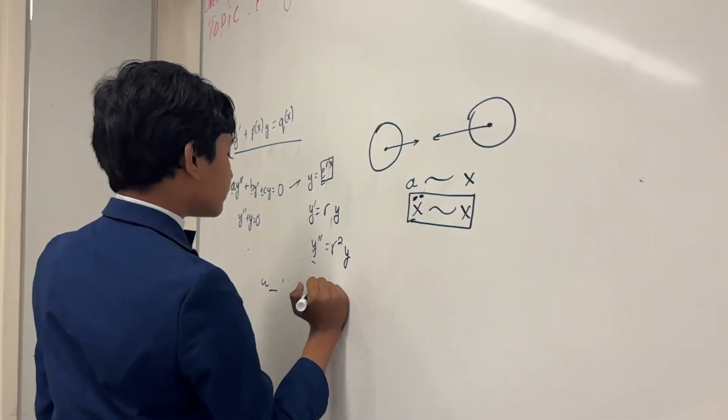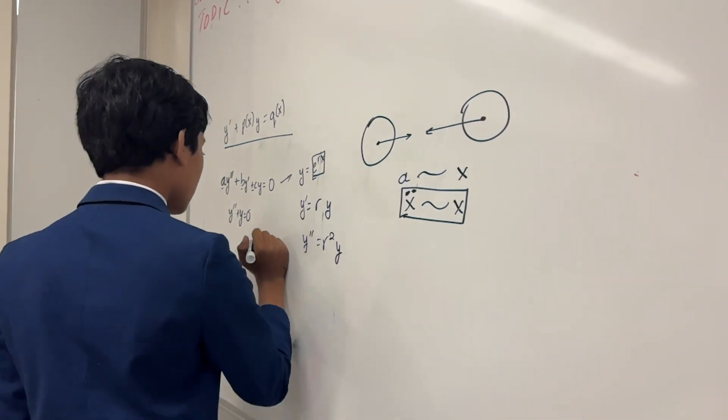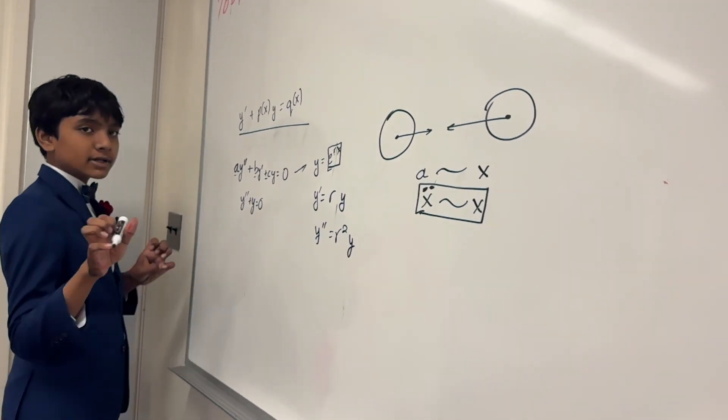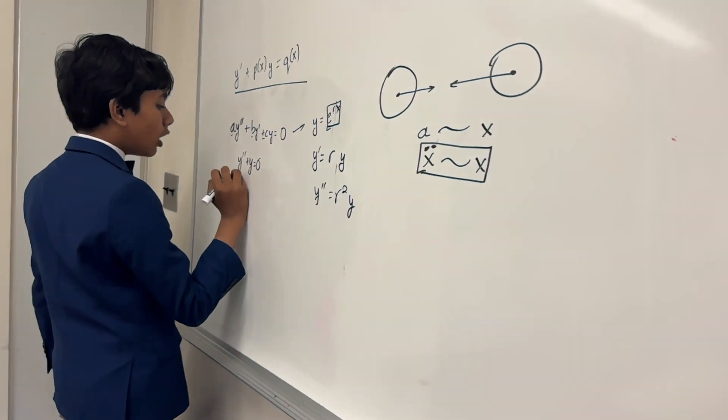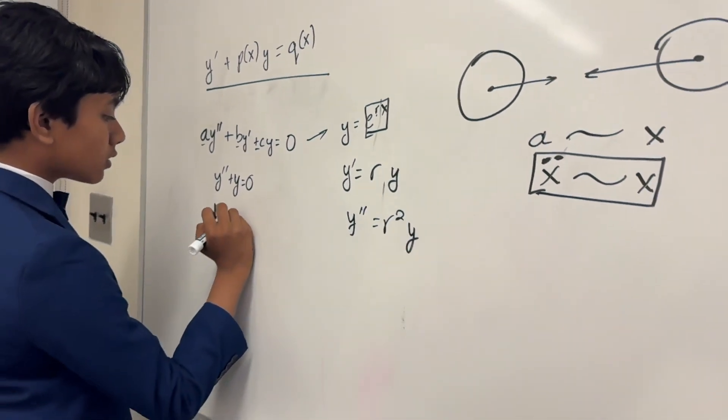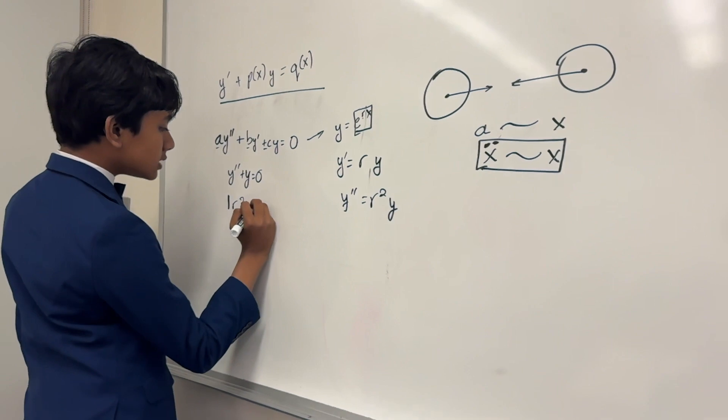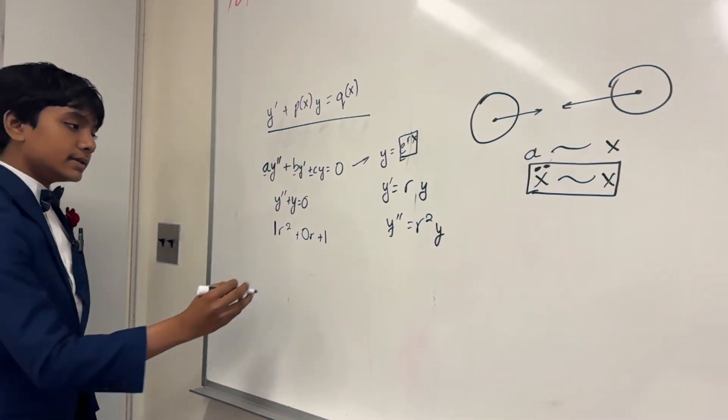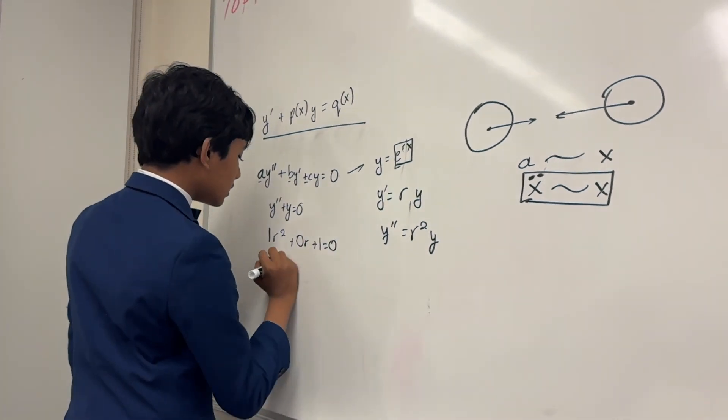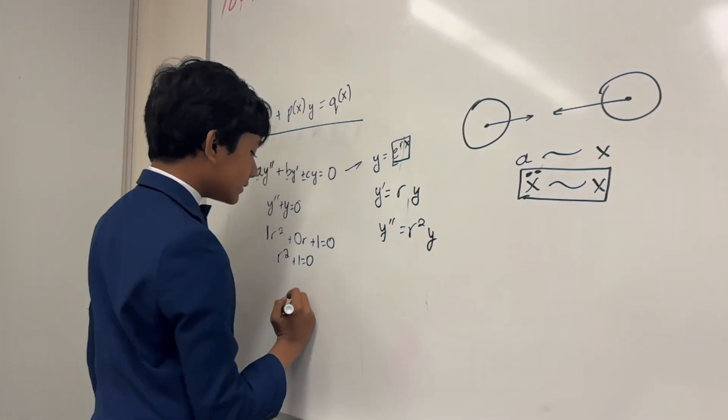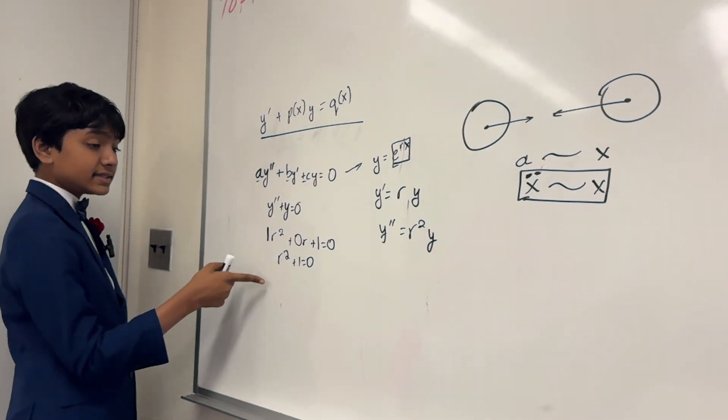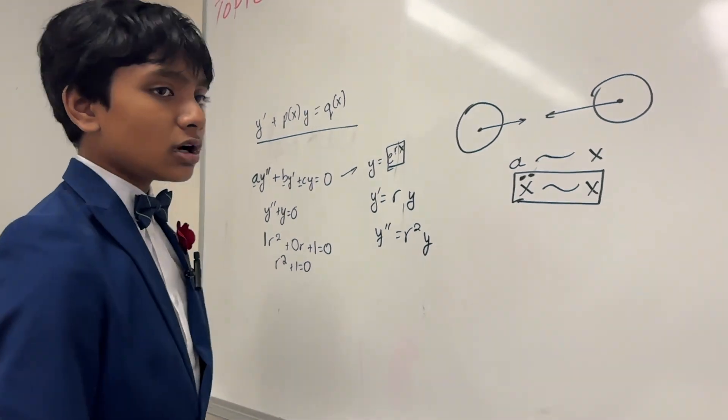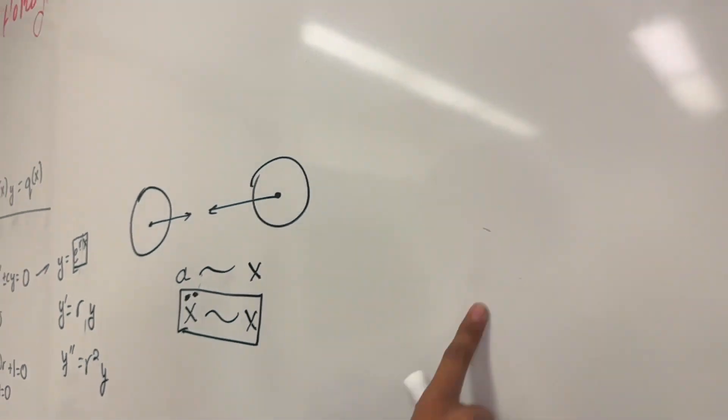For example, when we have y double prime plus y here, what are we actually solving for? Well, our characteristic polynomial, as some call it, is just 1r squared plus 0r plus 1 is equal to 0. So in other words, r squared plus 1 is equal to 0. Actually, this isn't a math there in case, and we're not going to get into that until the end of this lecture. So let's try something a little bit different.